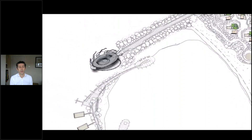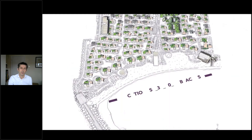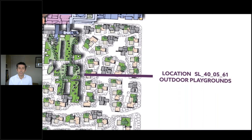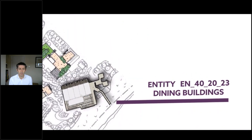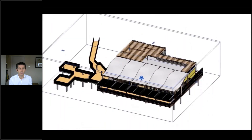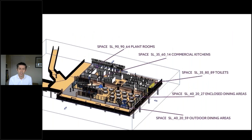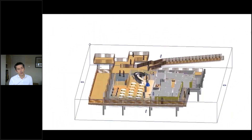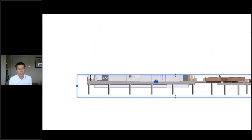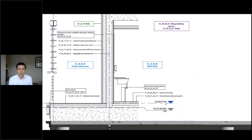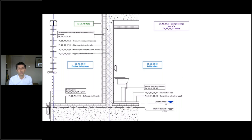Buildings themselves can be entities. There are tables for spaces and locations like playgrounds or beaches. Inside those entities are classifications, and you can break down the entities into spaces and locations such as plant rooms, kitchens, toilets. Creating those spaces and locations are the elements, systems and products. Elements such as walls, floors and roofs define the building. The elements themselves are made of systems like a structural wall or cladding system, and those systems are made up of products — things like particle boards, carrier rails, insulation foam boards, etc.